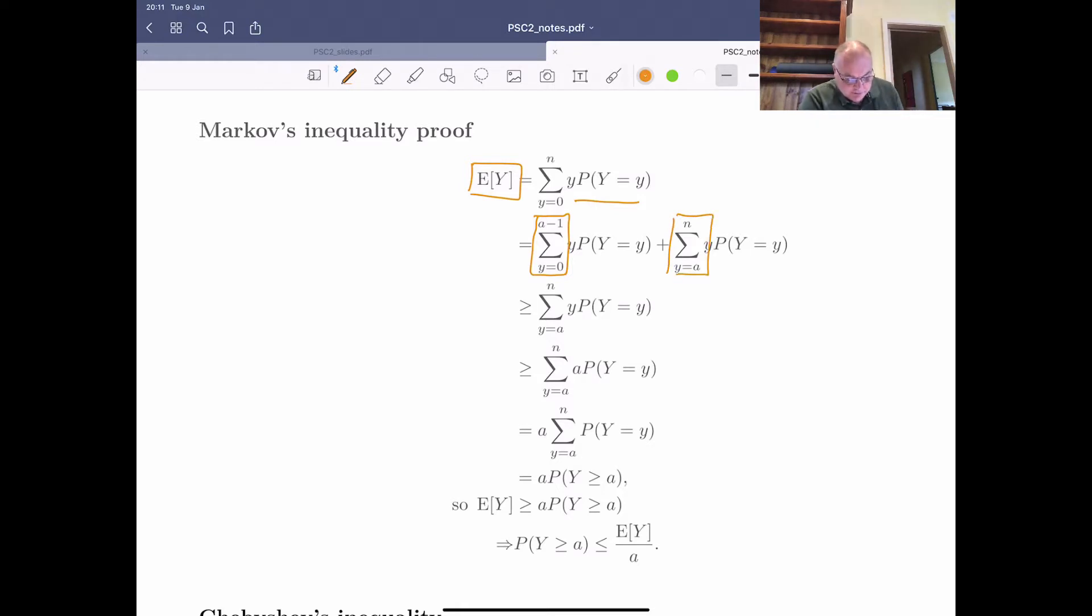So let's think about this left-hand term. So this term here, first of all, the Y can take values 0, 1, 2, 3, 4, all the way up to a minus 1. So this is positive. We know that this is going to be 0 or positive. So this whole term where we add up a load of things is going to be positive.